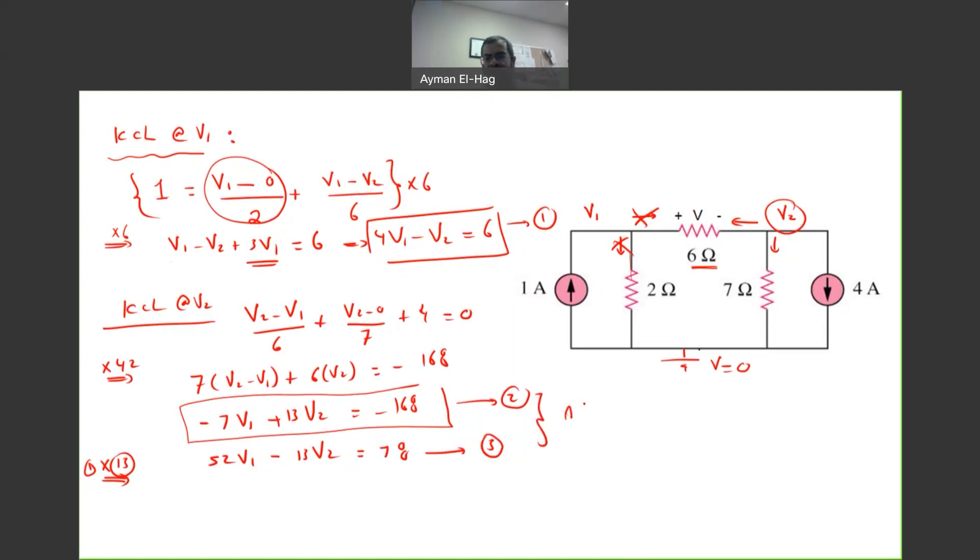Now, I will add these two equations to get rid of V2. So, when you add, it becomes 45 V1 is equal to minus 90, or V1 will equal to minus 2 V.